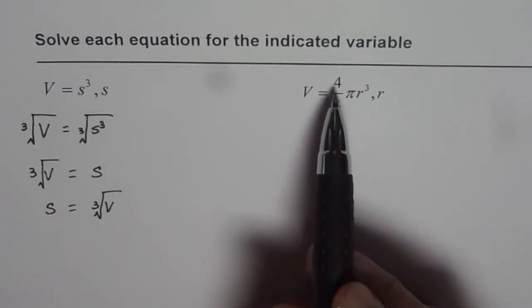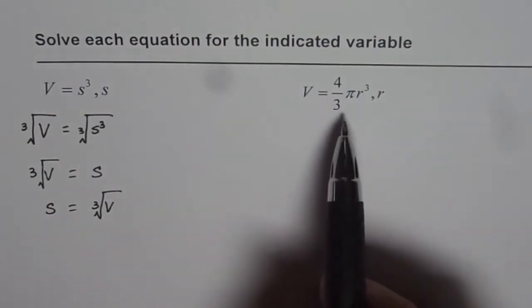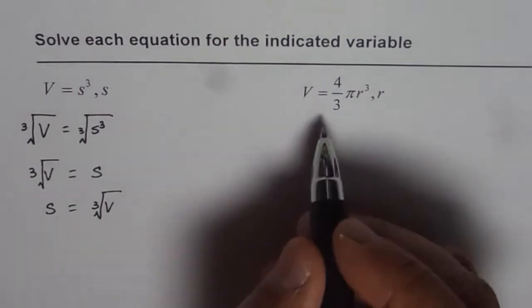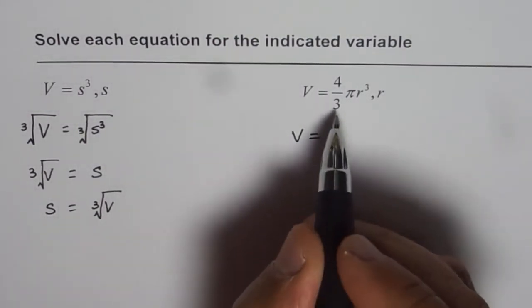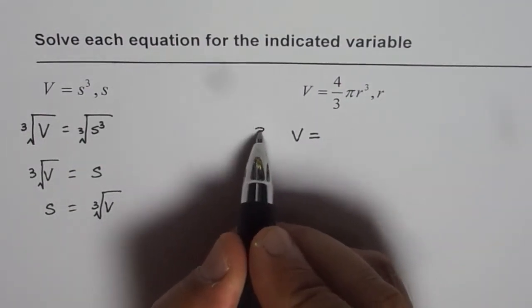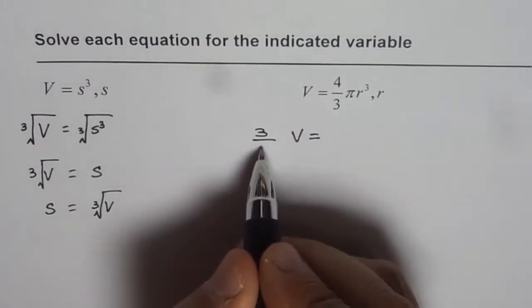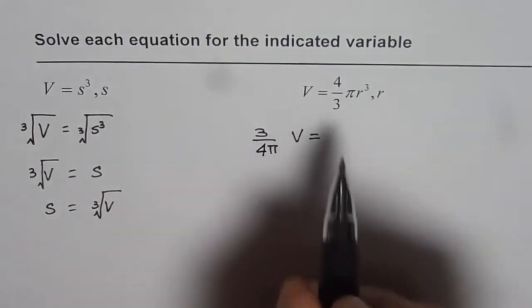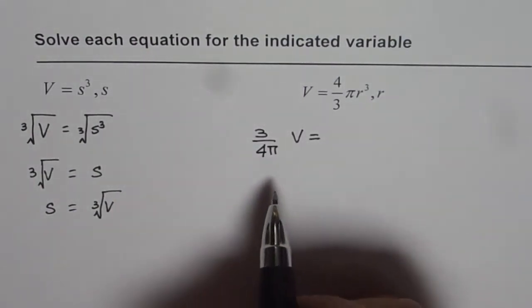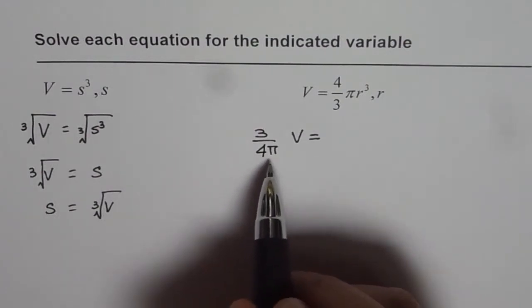Let us first get rid of 4/3 π. We will do the reverse operation. The reverse operation here should be to the volume. What we will do is multiply by 3, divide by 4, and divide by π. So basically, both sides we are going to multiply by 3 and divide by 4π.